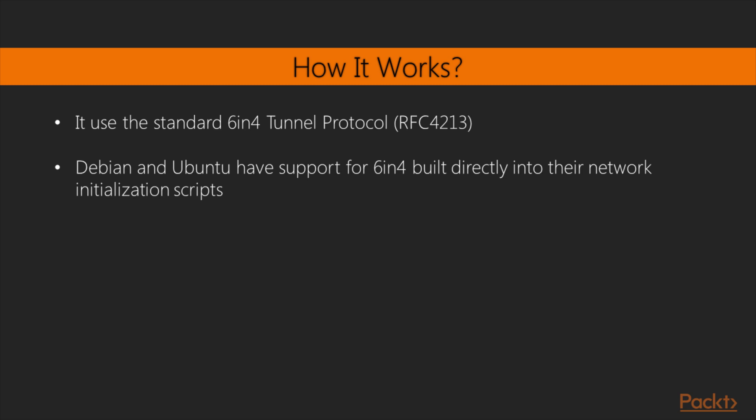Hurricane Electric IPv6 tunnels use the standard 6-in-4 tunnel protocol that's built automatically into both NetTools and IP Route 2. Additionally, Debian and Ubuntu have support for 6-in-4 built directly into their network initialization scripts, which allows for simplified configuration.